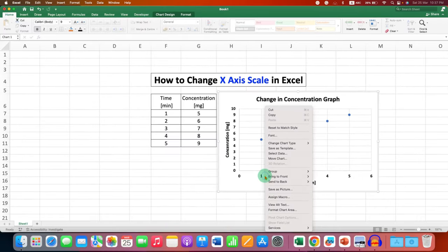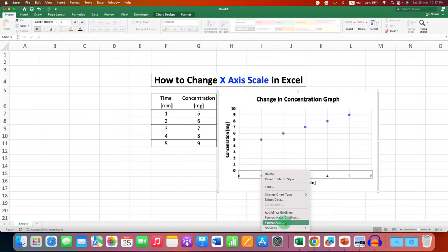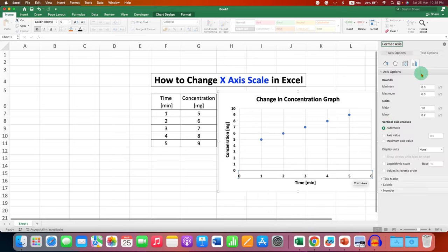Then right click on them and you will see here the format axis options. After clicking on it, you will see this pane.